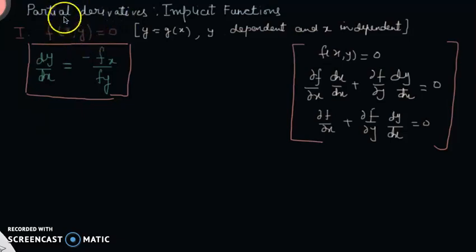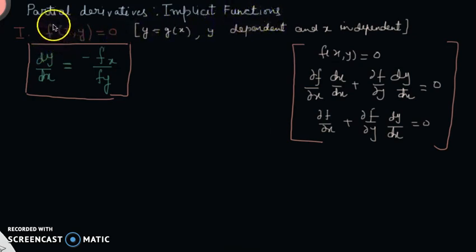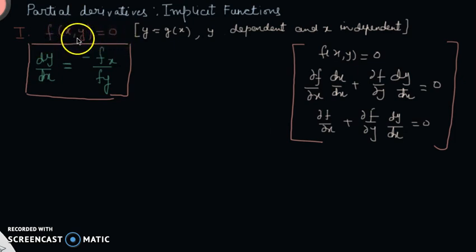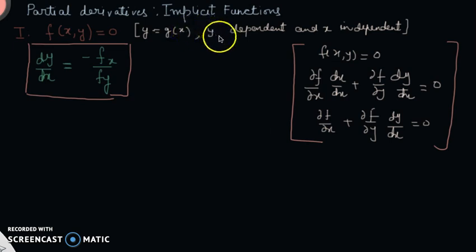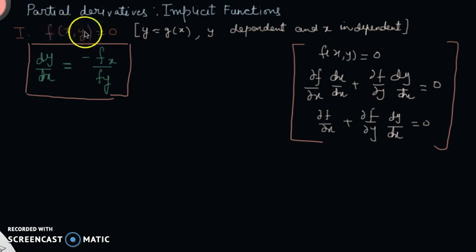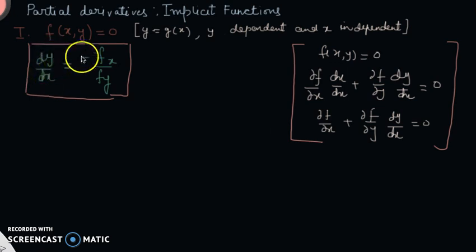Hello everyone, today I am going to discuss with you about partial derivatives in the case of implicit functions. For that I take the first case when we have a function of x and y equals to 0. This is an implicit function, meaning we cannot write y as a function of x. Here y is dependent and x is independent, but the relation between them is implicit, so we cannot write y as a function of x directly.